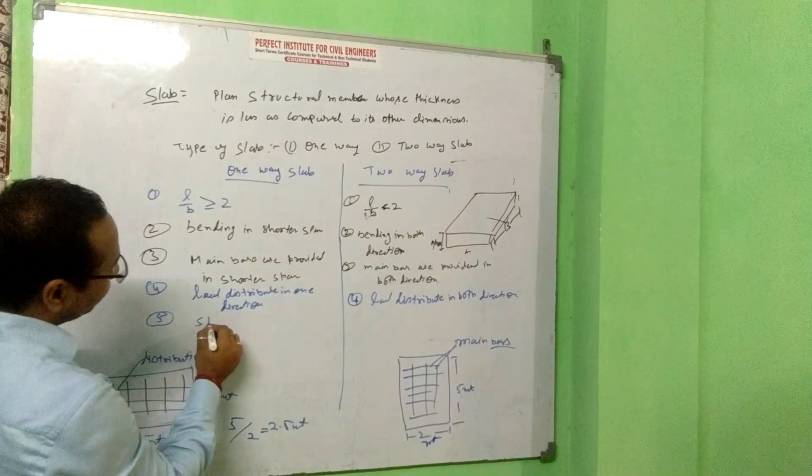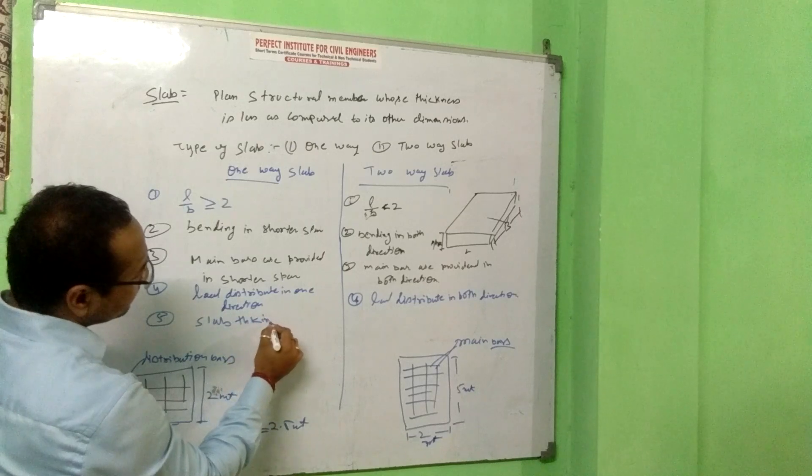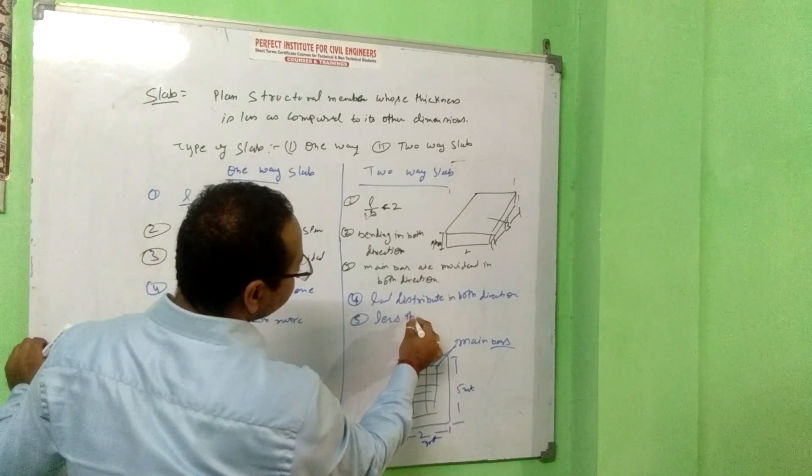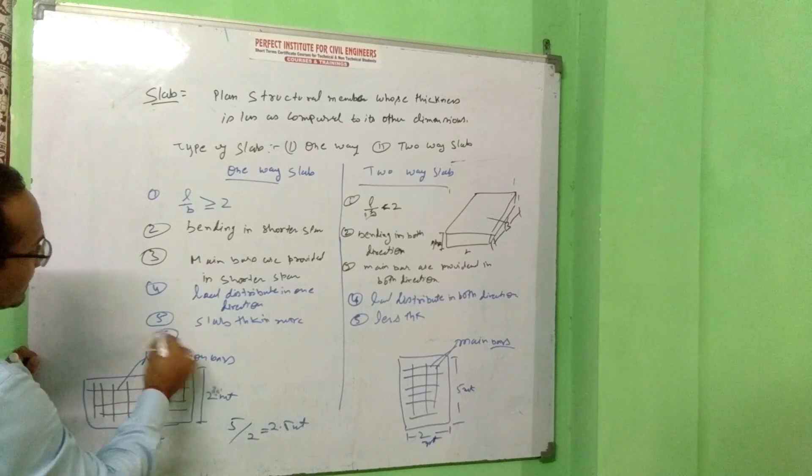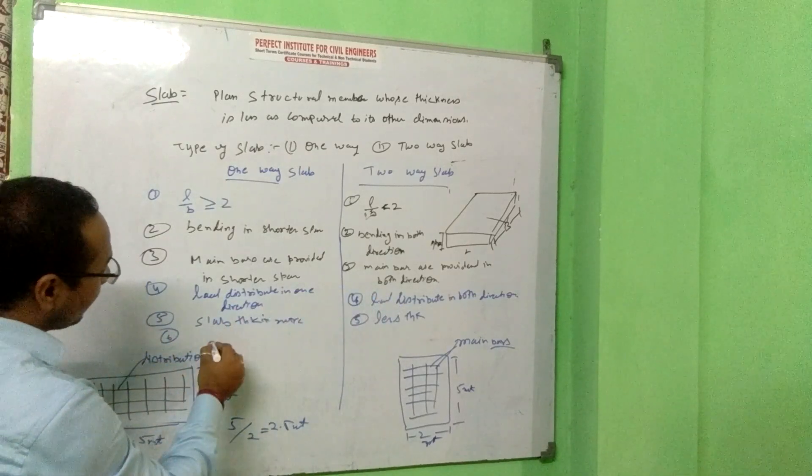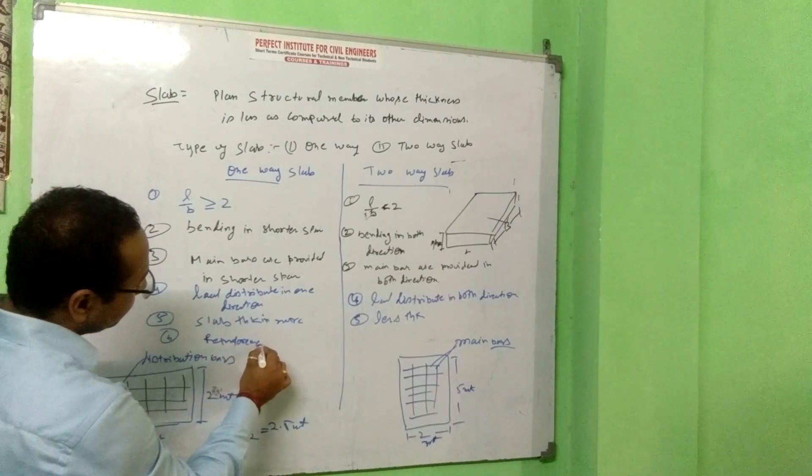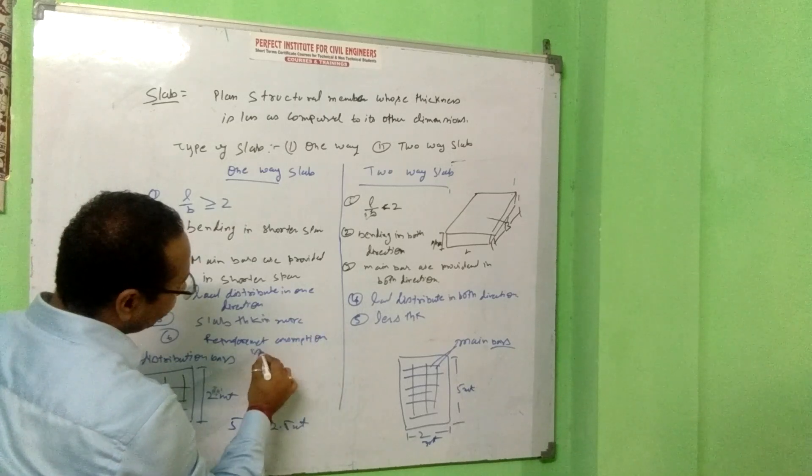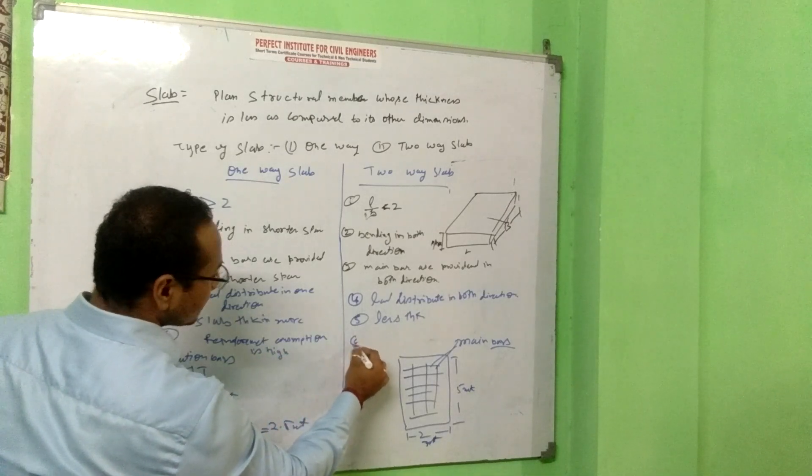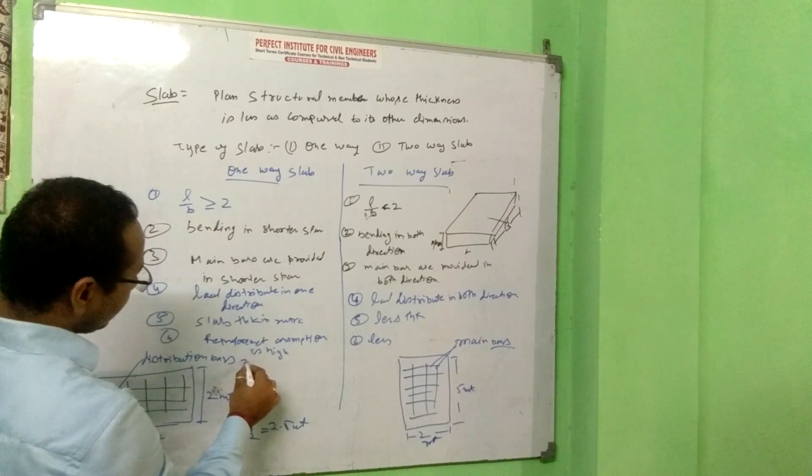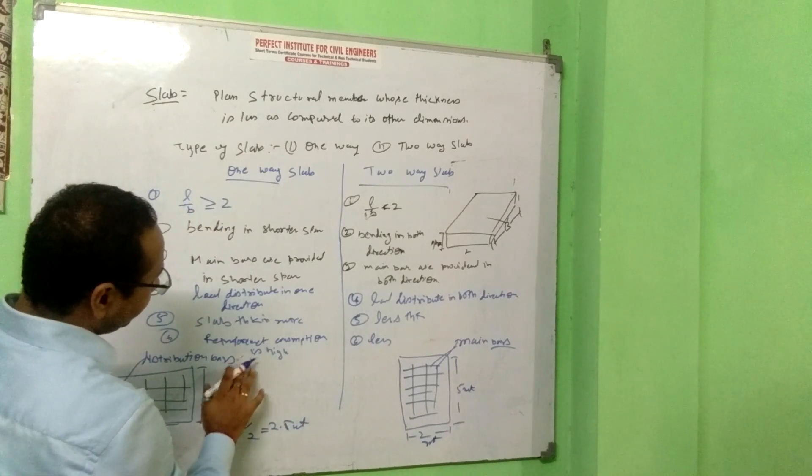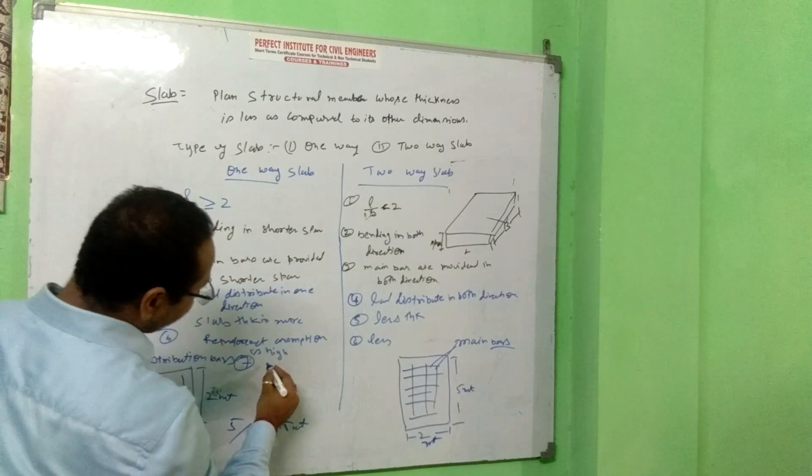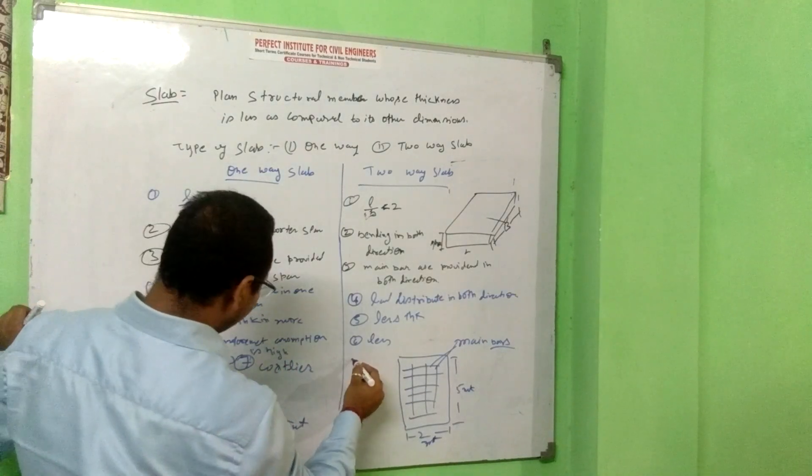And this, slab thickness is more. This is lower. In this case, slab thickness is high. This case, slab thickness is less. Reinforcement consumption, reinforcement congestion is high, this one is less. Then 7th, when reinforcement and slab is more than possible, the cost is higher. This is called economical.